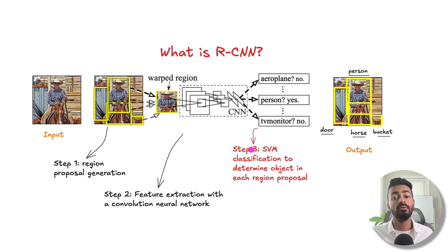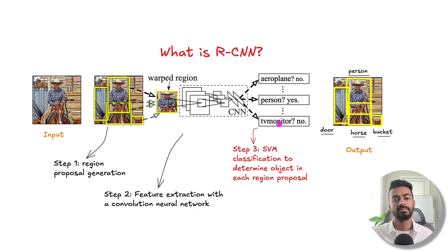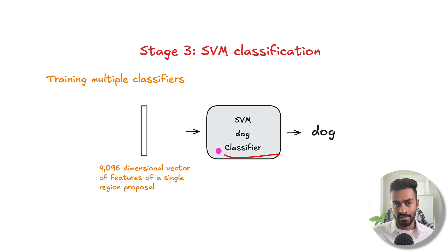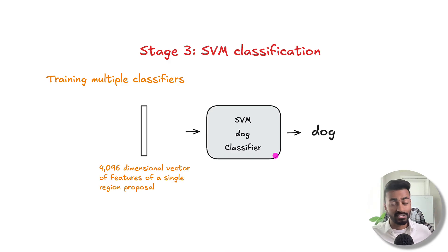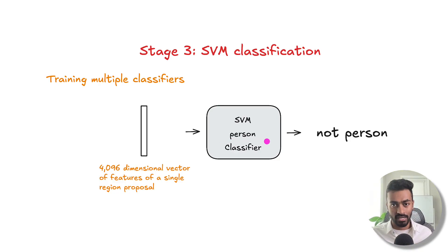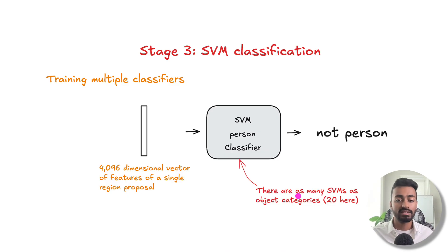For stage three, we use support vector machines — one per object category — to classify each region as an airplane, person, TV monitor, or anything else. Using the dataset created for fine-tuning, we know the label for each region proposal, so we train one SVM per class (e.g., dog classifier). There are as many SVMs as object categories — say, 20. Once trained, for each of the 2000 region proposal vectors (4096 dimensions each), we pass it through all 20 SVMs to get probabilities for each class.